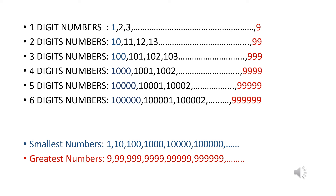Four-digit numbers are from 1,000 to 9,999. The smallest four-digit number is 1,000 and the greatest is 9,999. Five-digit numbers are from 10,000 to 99,999. The smallest five-digit number is 10,000 and the greatest is 99,999. Six-digit numbers are from 1,00,000 to 9,99,999.